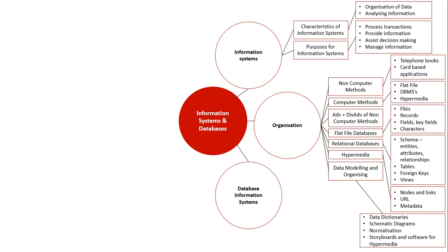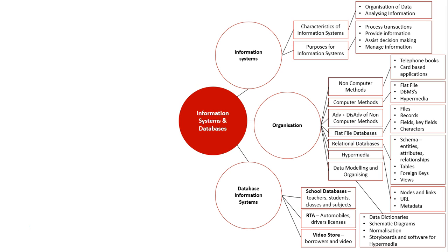The next part looks at specific case studies of databases. Information systems you are expected to examine as part of the HSC course include a school database with entities of teachers, students, classes, and subjects; an RTA database with automobiles, registered driver's licences, and car registrations; and a video store database with entities of borrowers, videos, and rentals.